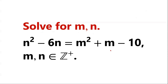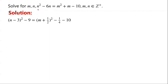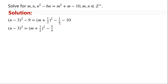Solve this equation. n squared minus 6n can be written as (n minus 3) squared minus 9, and m squared plus m can be written as (m plus a half) squared minus a quarter. Moving minus 9 to the right-hand side, we have minus a quarter minus 10 plus 9, which equals minus 5 over 4.